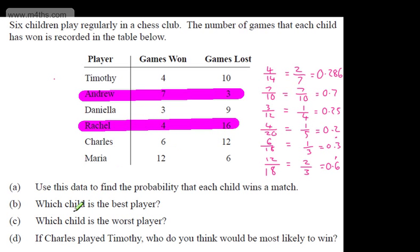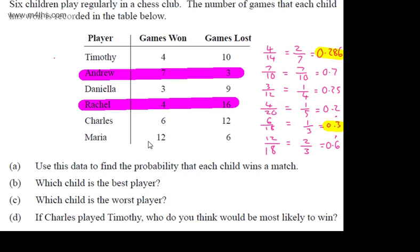If Charles played Timothy, who would be most likely to win? Charles has a probability of 0.3 recurring, and Timothy has 0.286, so we could say Charles is more likely to win, as the probability of him winning a match is higher.